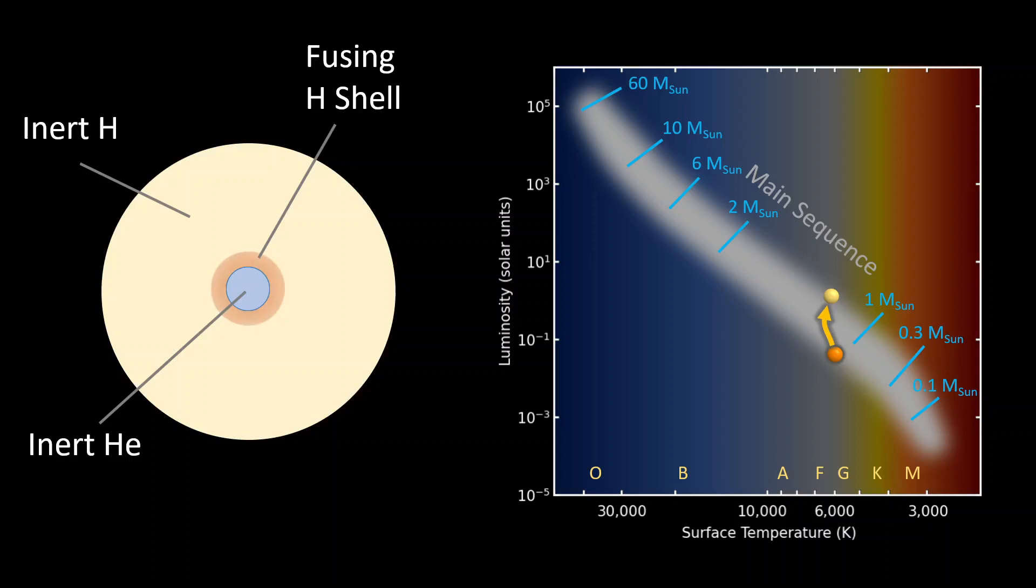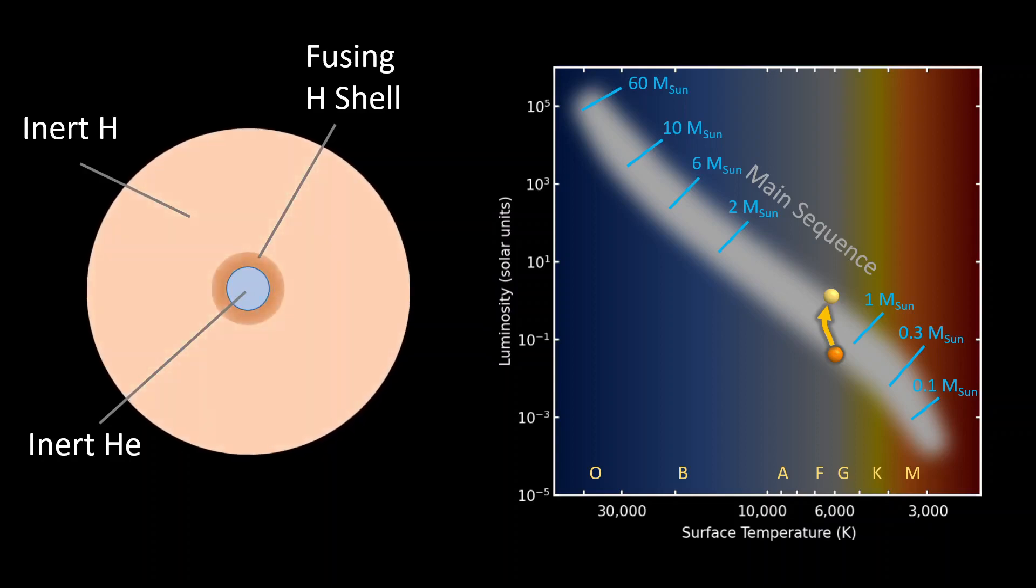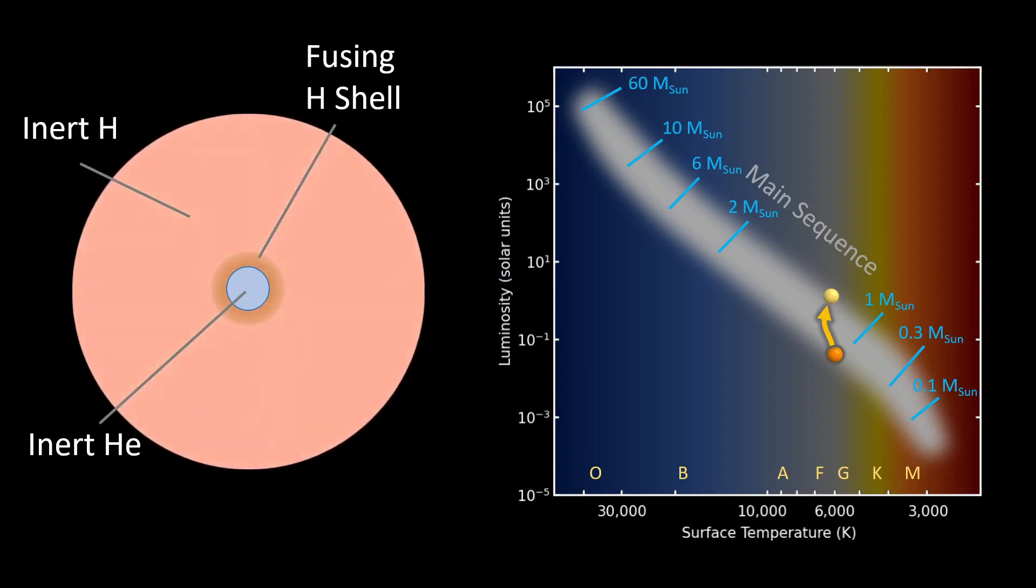As the helium core continues to contract and transfer heat around it, the fusion rate in the surrounding hydrogen shell intensifies. The star quickly reaches a rate of energy production higher than that reached when the energy was produced by hydrogen fusion at the core. The excess of energy flow increases the luminosity of the star and expands its outer layers.